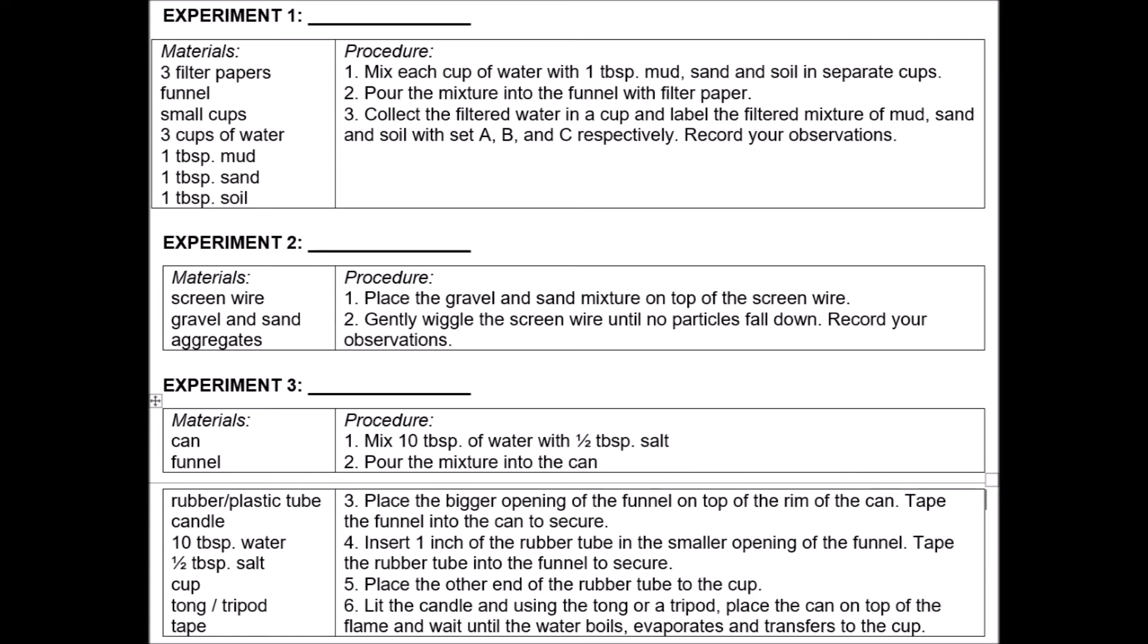Okay, next experiment three. Mix 10 tablespoon of water with 1 half teaspoon salt. Pour the mixture into the can. Place the bigger opening of the funnel on top of the rim of the can. Tape the funnel into the can to secure. Insert 1 inch of the rubber tube in the smaller opening of the funnel. Tape the rubber tube into the funnel to secure. Place the other end of the rubber tube to the cup. Light the candle and use the tong or a tripod. Place the can on top of the flame. And wait until the water boils, evaporates, and transfers to the cup. So we have boiling here. Then, the water travels. And then, it transfers to another cup. So that is distillation, the process I explained to you of evaporating and then condensation to separate the water from the impurities with it.